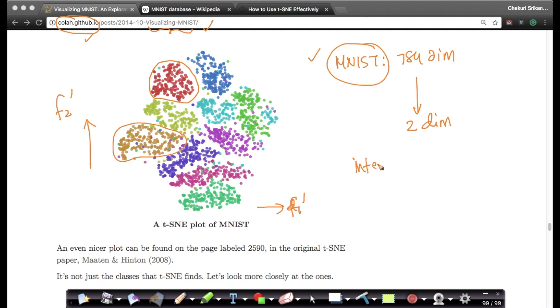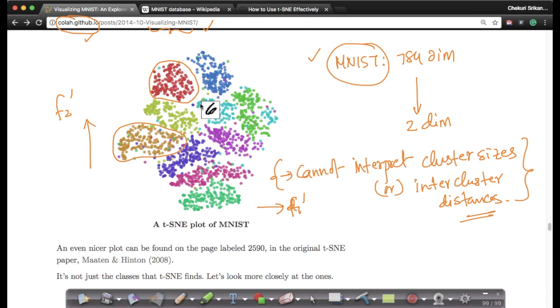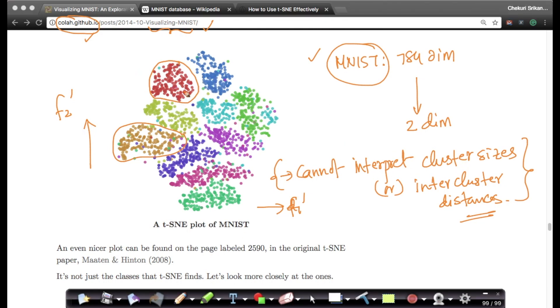From this plot we cannot interpret that the spread of zeros are here, ones are here. We cannot interpret cluster sizes or inter-cluster distances in t-SNE. So we saw this when we were going through the distill.pub examples. So I cannot say that zeros are widespread and so are my ones, so are my sixes. I cannot talk about how well spread the points are. So I cannot interpret the cluster sizes or the cluster distances. Suppose if this is one cluster and this is another cluster, I can't interpret this distance. There is no way I can interpret it.